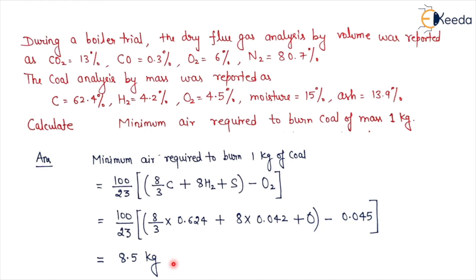That means the mass of air, this is a minimum mass of air which we require to burn the 1 kg of coal. That means this is the stoichiometric air required or theoretical mass of air required or minimum mass of air required to burn the coal of 1 kg.